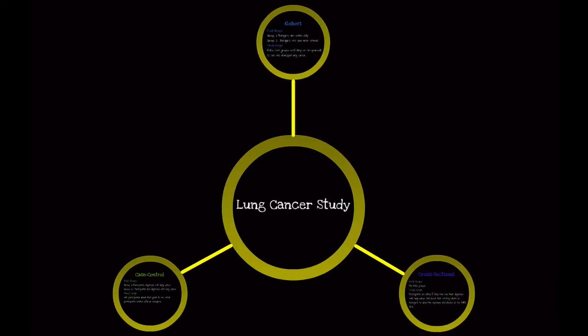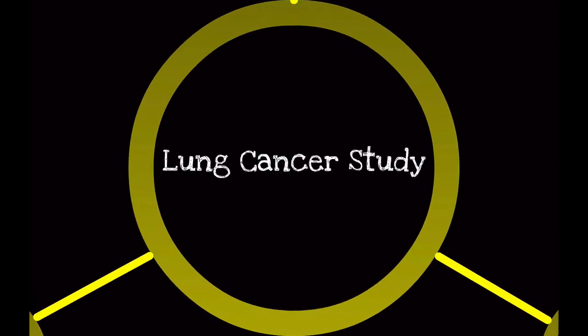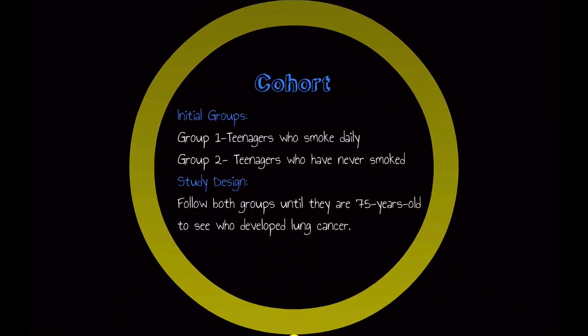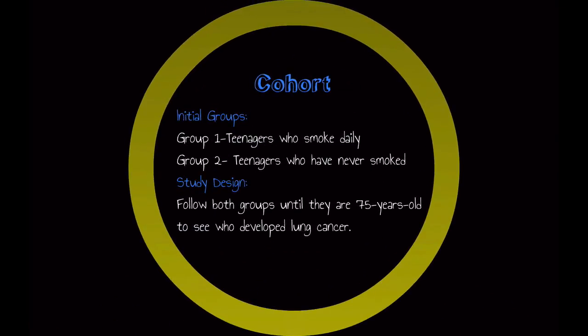Let's look at a lung cancer study. Let's say we're trying to figure out the association between teenage smoking and lung cancer. We could go about this study in three different ways. In a cohort study, we would have two initial groups: a group of teenagers who smoke daily and a group of teenagers who have never smoked. In our study design, we would follow both groups until they are 75 years old to see who developed lung cancer.